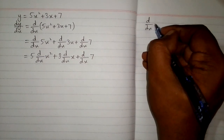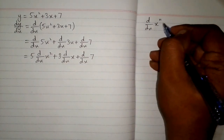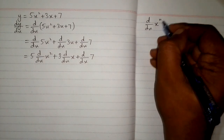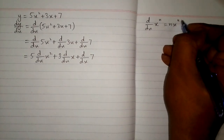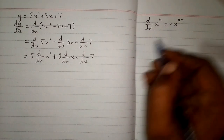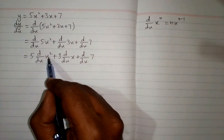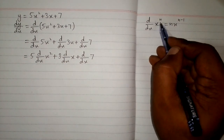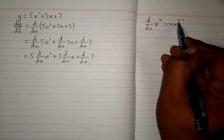We know that the power rule of differentiation states that the derivative of x to the power n is equal to n times x to the power n minus 1. We can apply this formula here, and we can see that we have 2 in place of n.